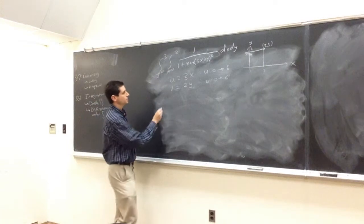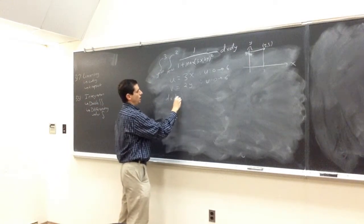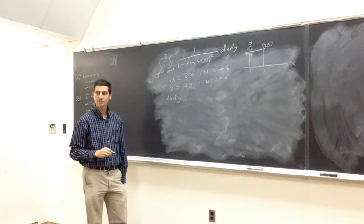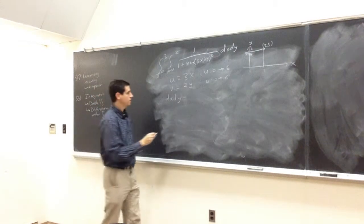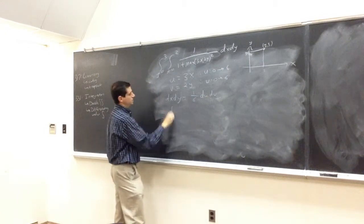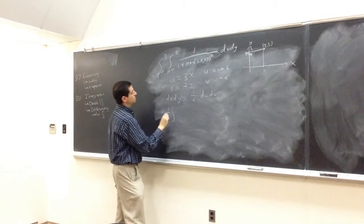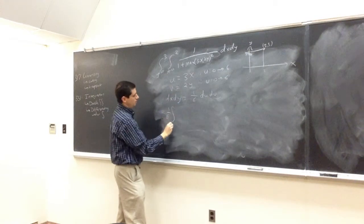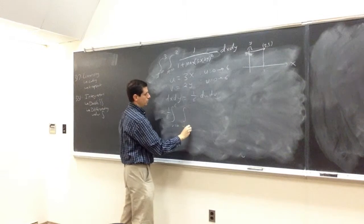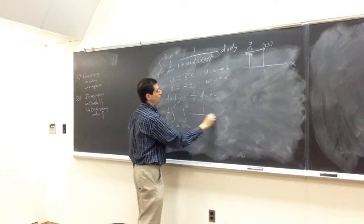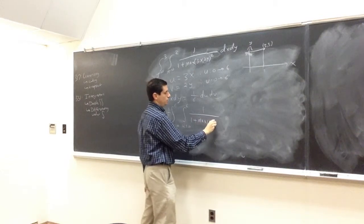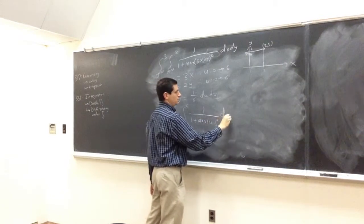So we get our integral equals 1/6 times the integral, v from 0 to 6, u from 0 to 6, of 1 over 1 plus the maximum of u, v, squared, du dv.